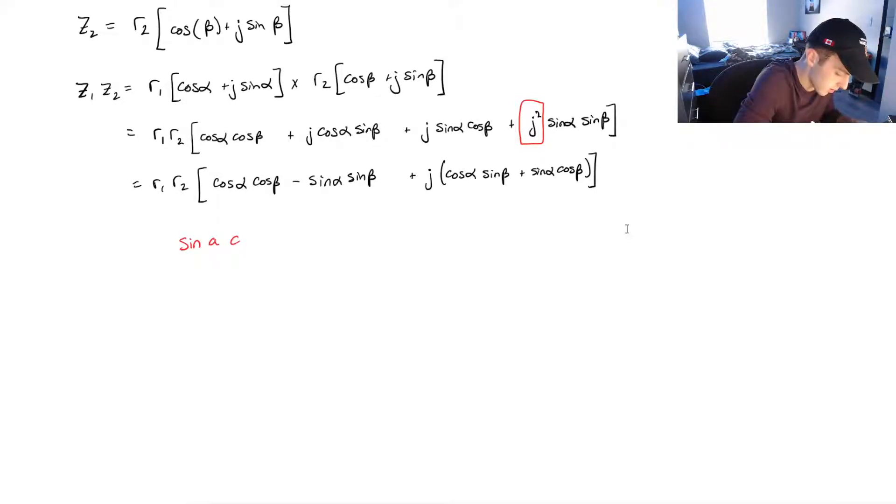sin of a times cos of b plus cos of a times sin of b is going to be equal to sin of a plus b.